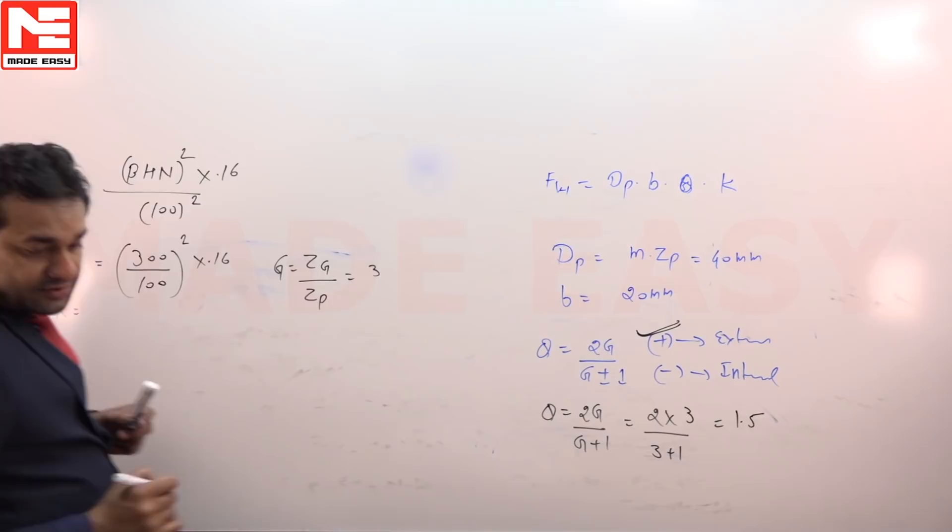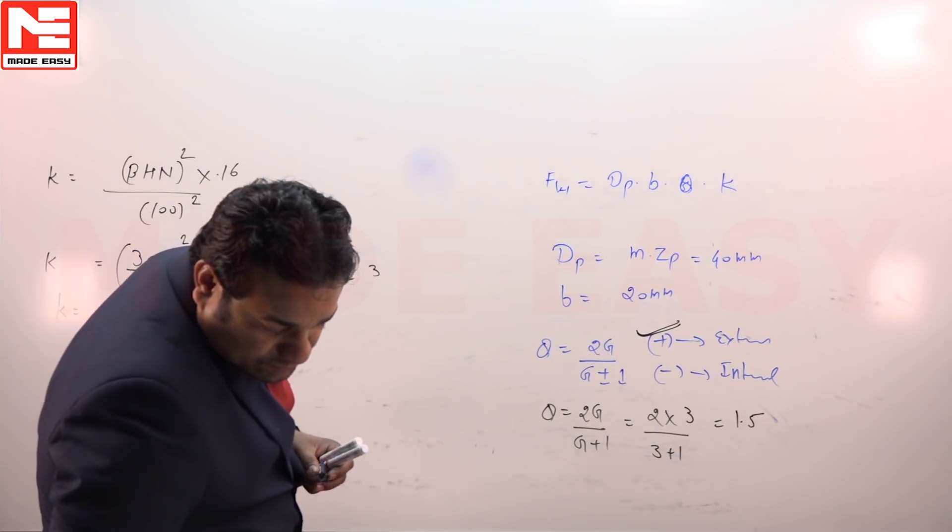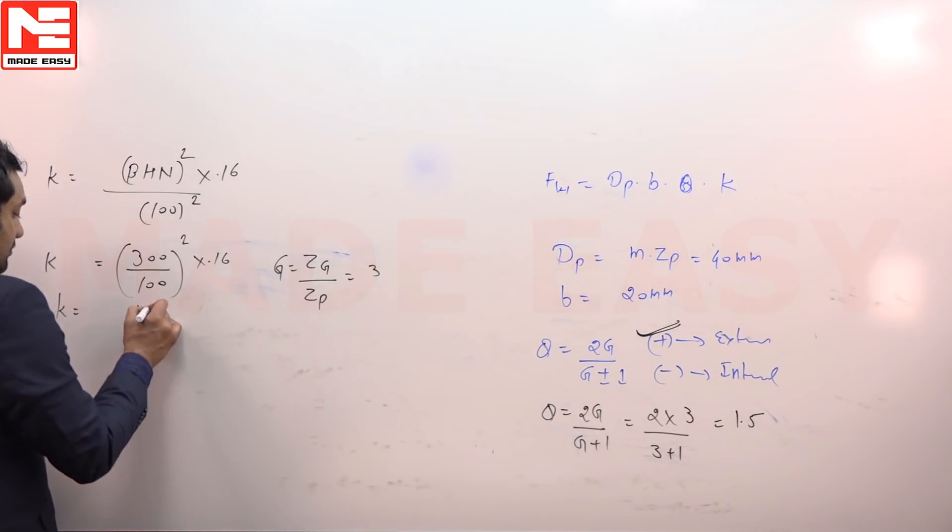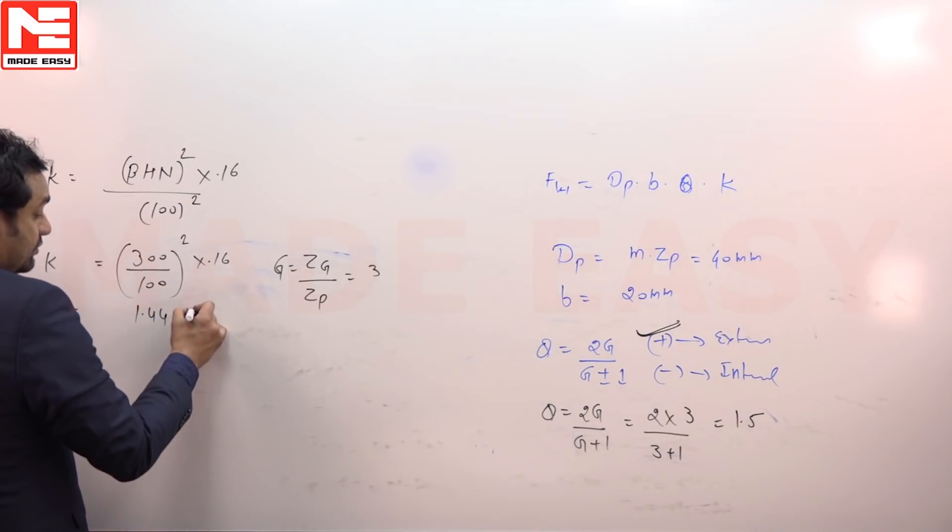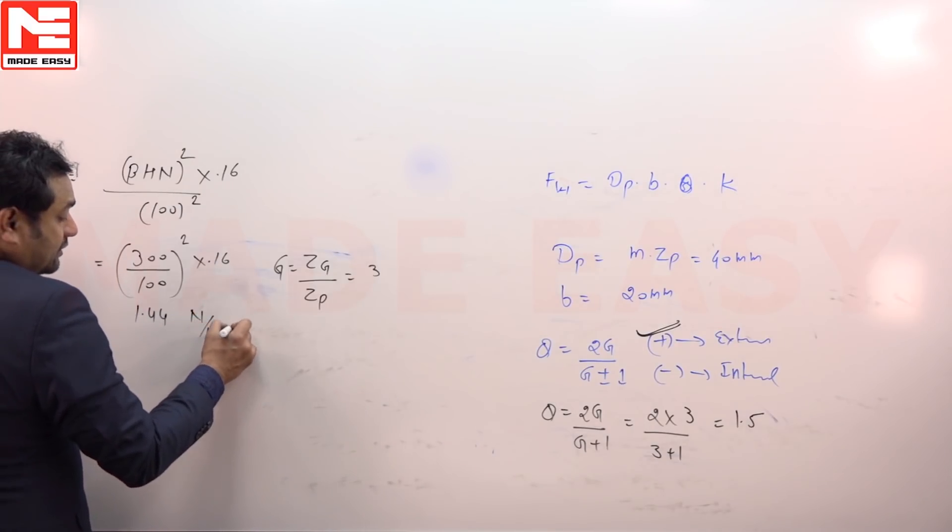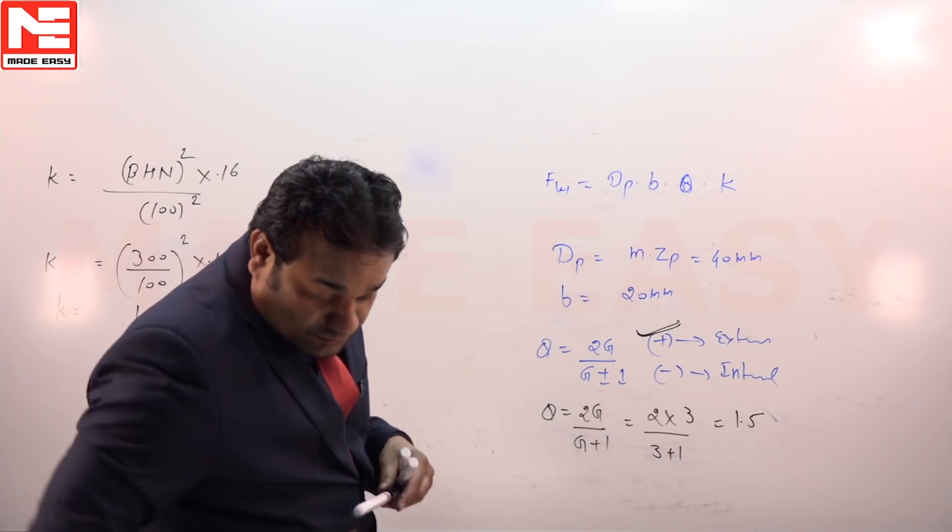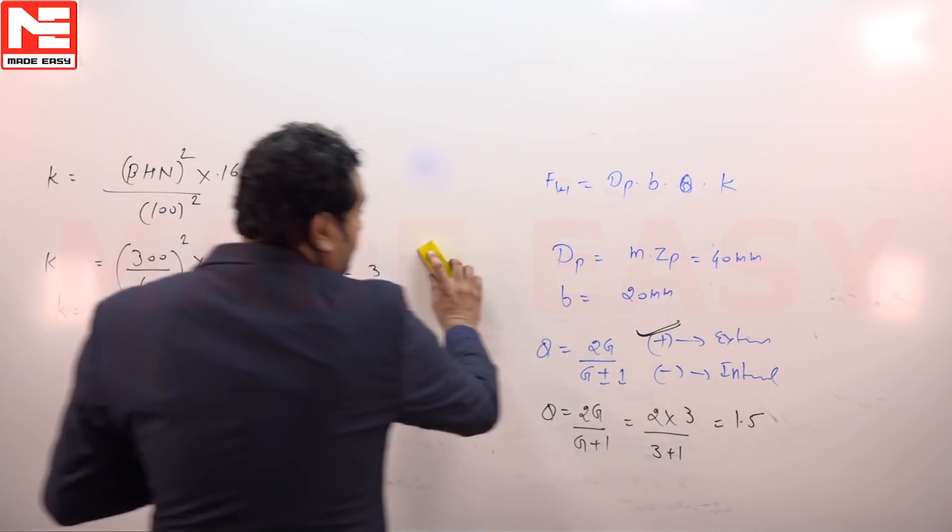Brinell hardness number is given in the question as 300. So 300 squared divided by 100 squared times 0.16 gives K value around 1.44. The unit is Newton per mm squared. Now put all this data together.